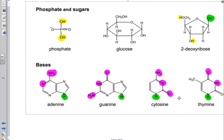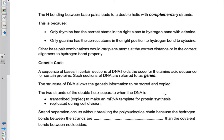G and C have three groups of atoms that form three hydrogen bonds. A and T have two groups of atoms that form hydrogen bonds. The two strands of the DNA are complementary to one another — this arises from the base pairing. Only thymine has the correct atoms in the right place to hydrogen bond with adenine, and only guanine has the correct atoms in the right place to hydrogen bond to cytosine. Other base pair combinations wouldn't place the atoms at the correct distance or alignment to hydrogen bond properly, and this is the way that genes are replicated correctly.